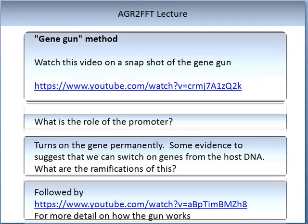I'd like you to pause the video now and go to another YouTube video — the link is on Moodle. Please watch the Gene Gun method; this gives you a practical demonstration of what it looks like to actually do this method. The second video I would like you to watch is called GeneWorks, also found on Moodle. I want you to think about: what is the role of the promoter? What happens if a gene is turned on permanently? There is some evidence to suggest that we can switch genes on from the host DNA, but what other ramifications do we need to worry about? Please make notes on these two videos and insert them into your lecture notes here.